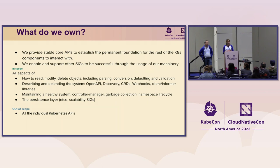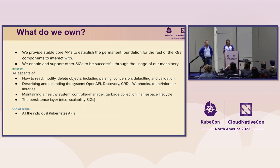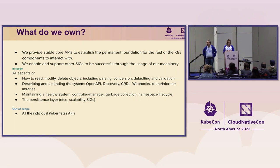How to maintain a healthy system is very important: controller manager, garbage collection, the namespace cluster lifecycle, and our new SIG which is SIG etcd, and also scalability — they all own that persistent layer and data store. What is out of scope? Individual APIs, how to work with them, and applications are out of scope for API machinery.